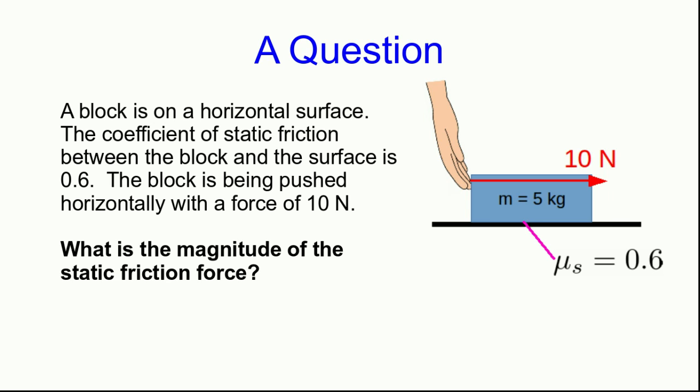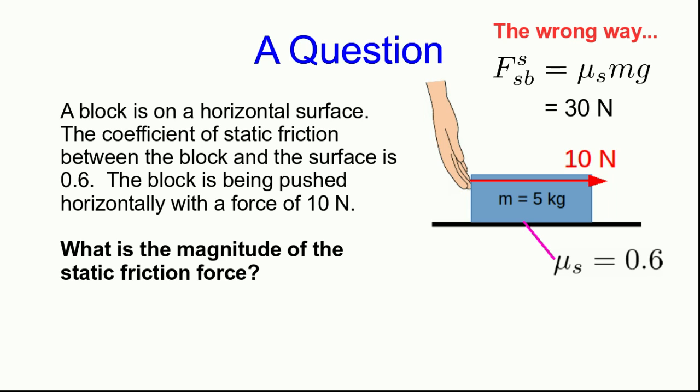At the end of the first half of this video lecture, I asked this question: if you push with a 10 newton force on this block, what's the magnitude of the static friction force? I hope you didn't do it the wrong way. The wrong way would have been to say that static friction is mu s times m g, or mu s times the perpendicular force — which in this case is m g — giving you 30 newtons. That is incorrect.